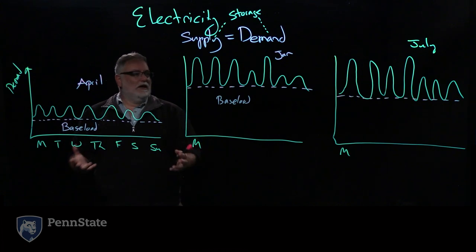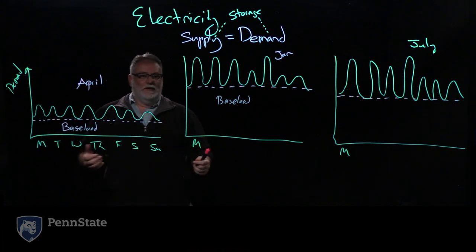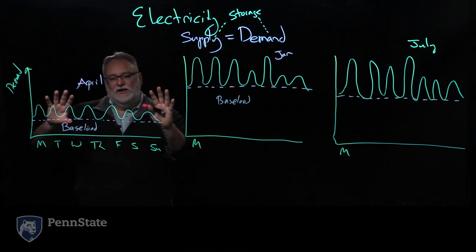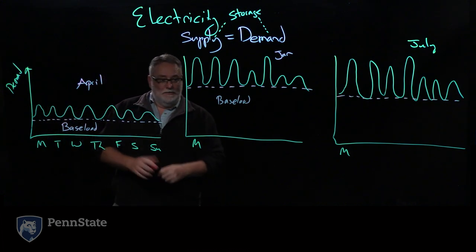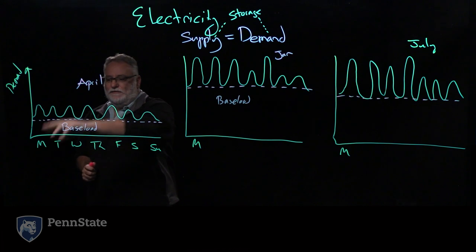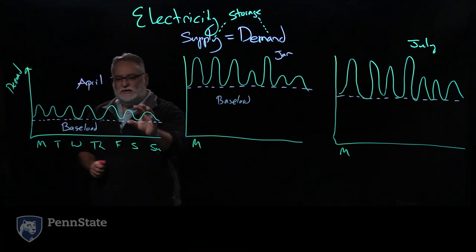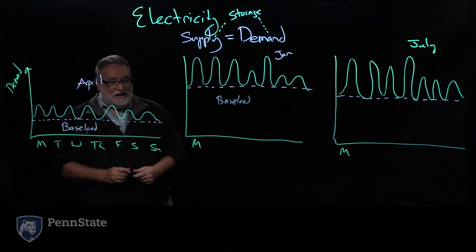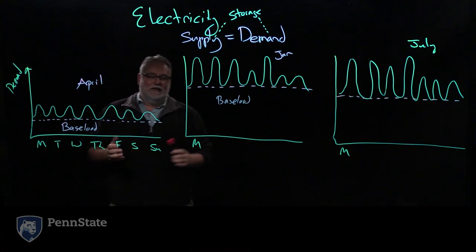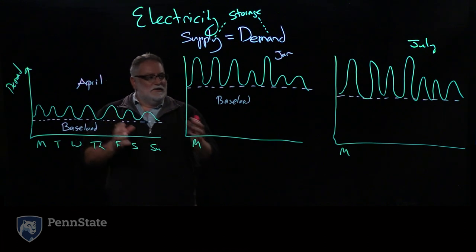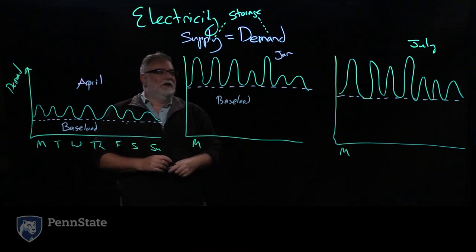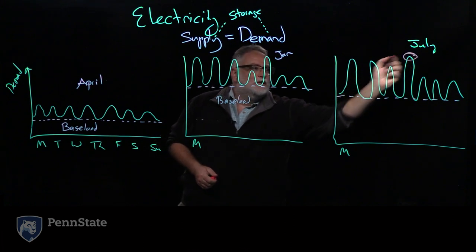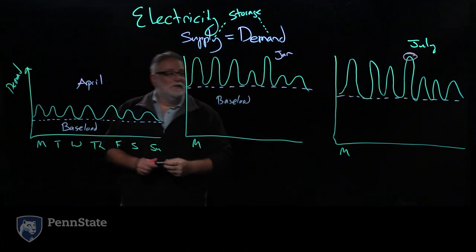What we've seen is there's considerable variability between the seasons. We have lower electricity use in April in Pennsylvania. We see almost a doubling, perhaps more than a doubling, between the base load and the highest generated need of electricity. Obviously winter and summer is where it might peak. In this particular case, we can see that the peak was actually in the summer, which is the case for Pennsylvania.